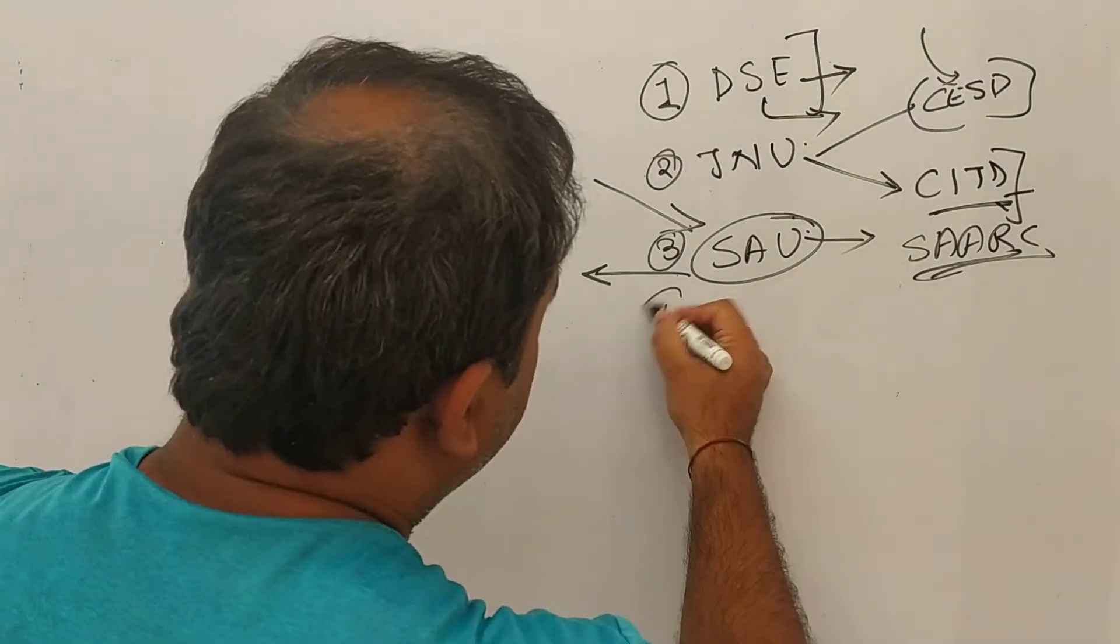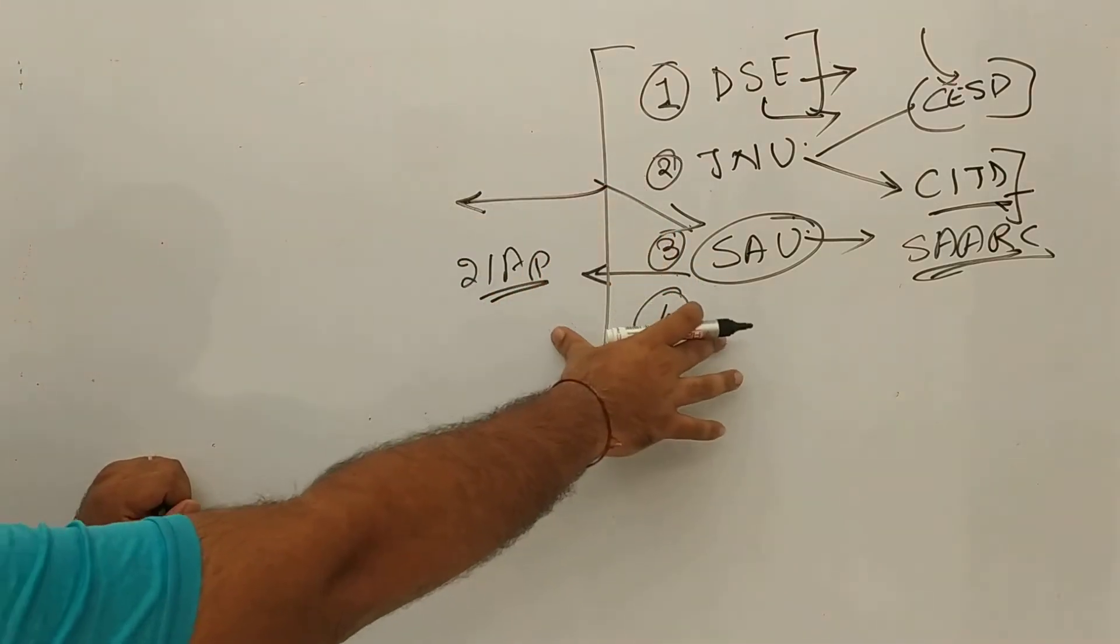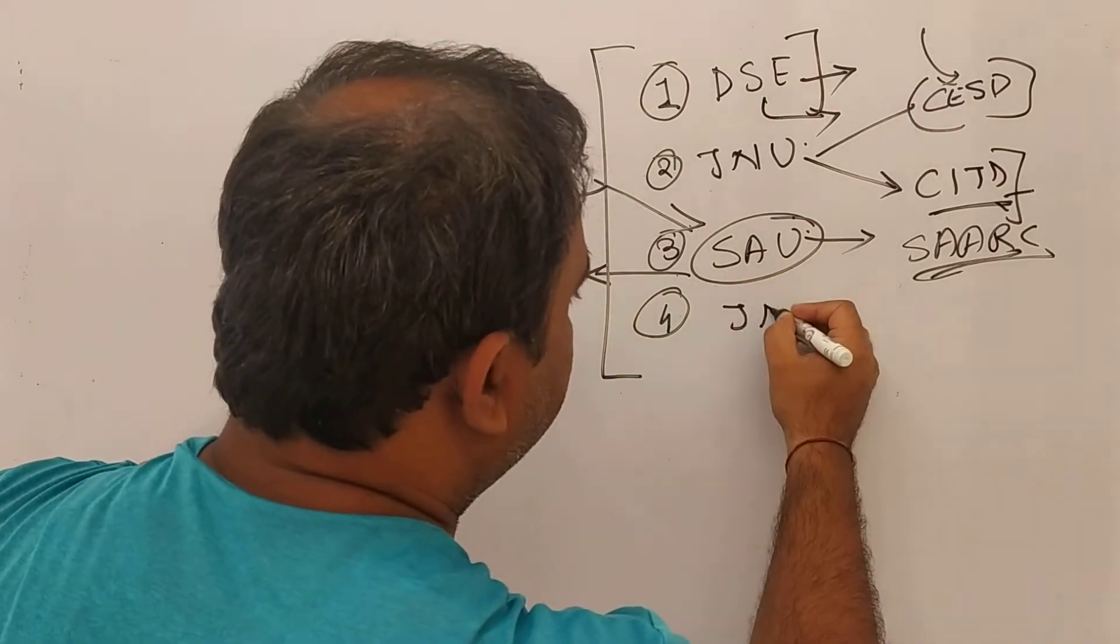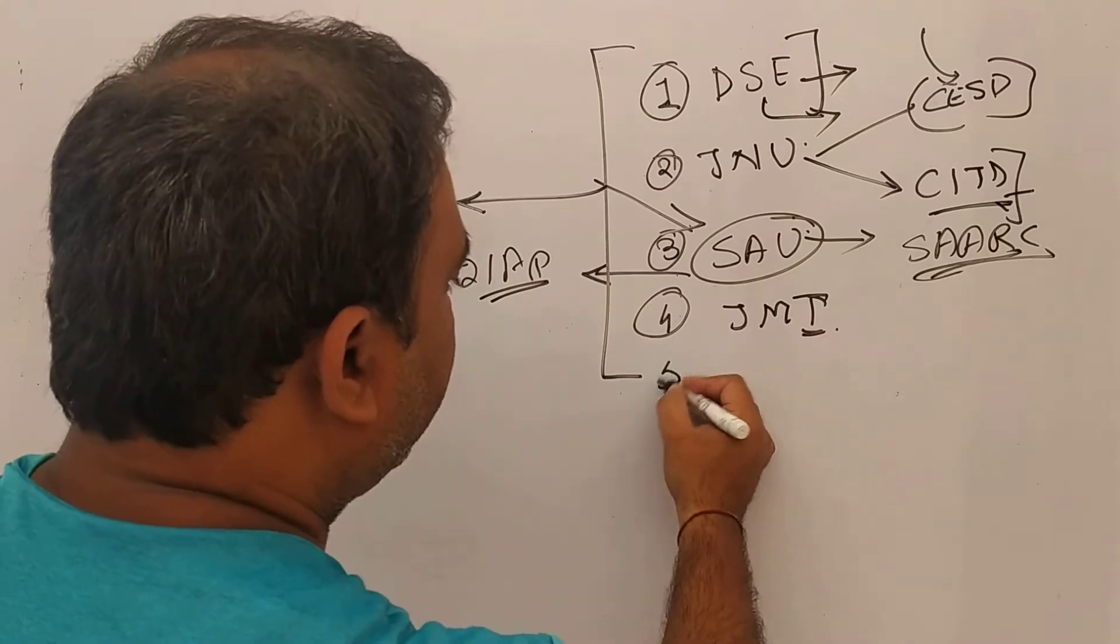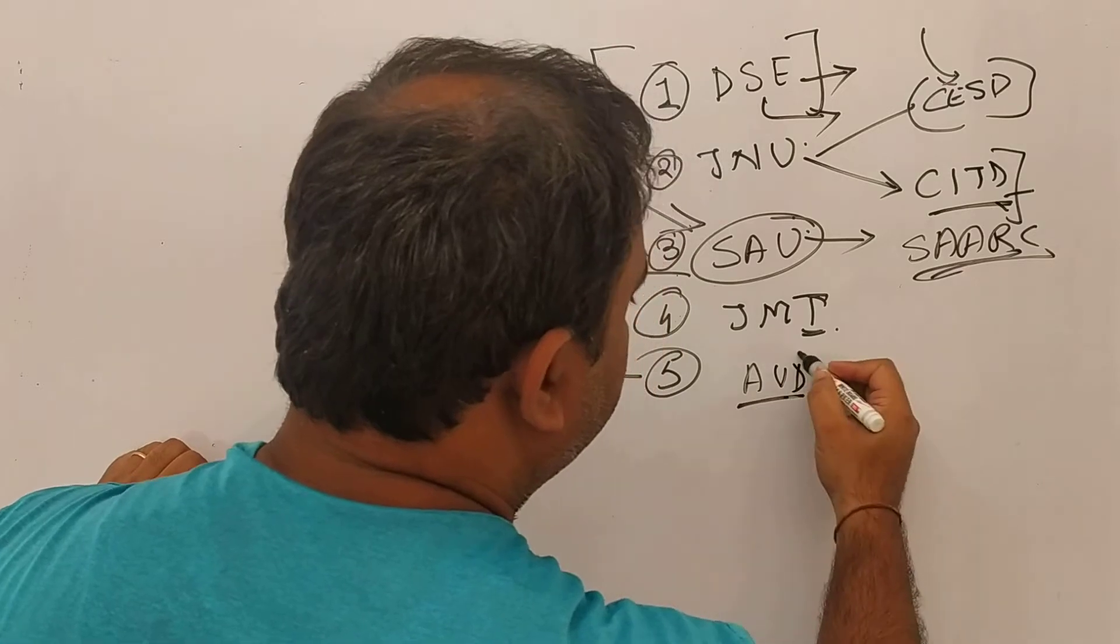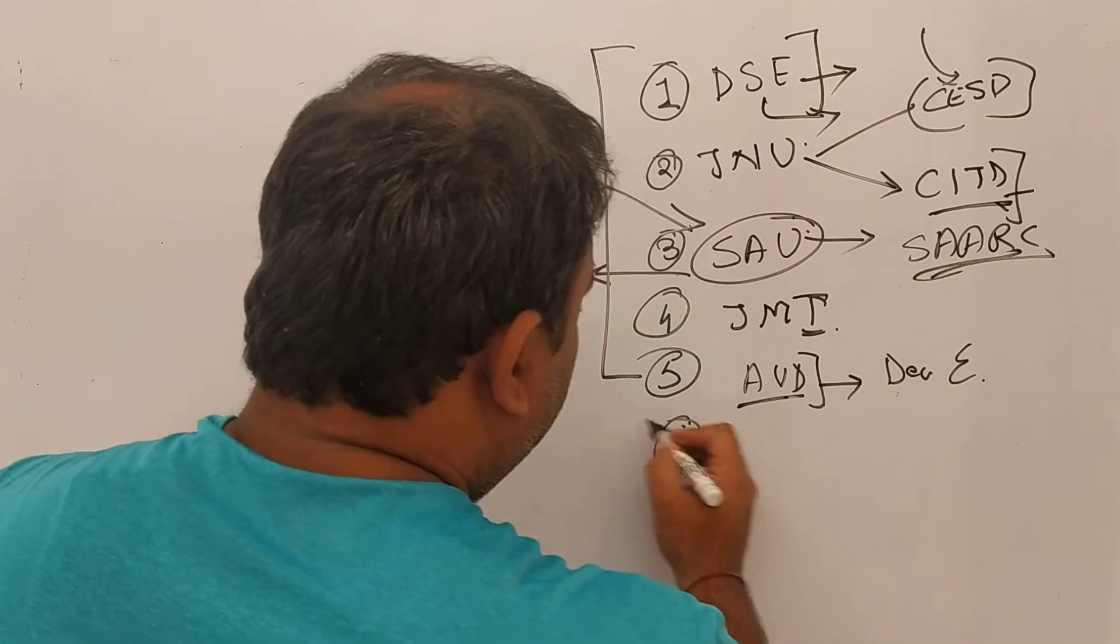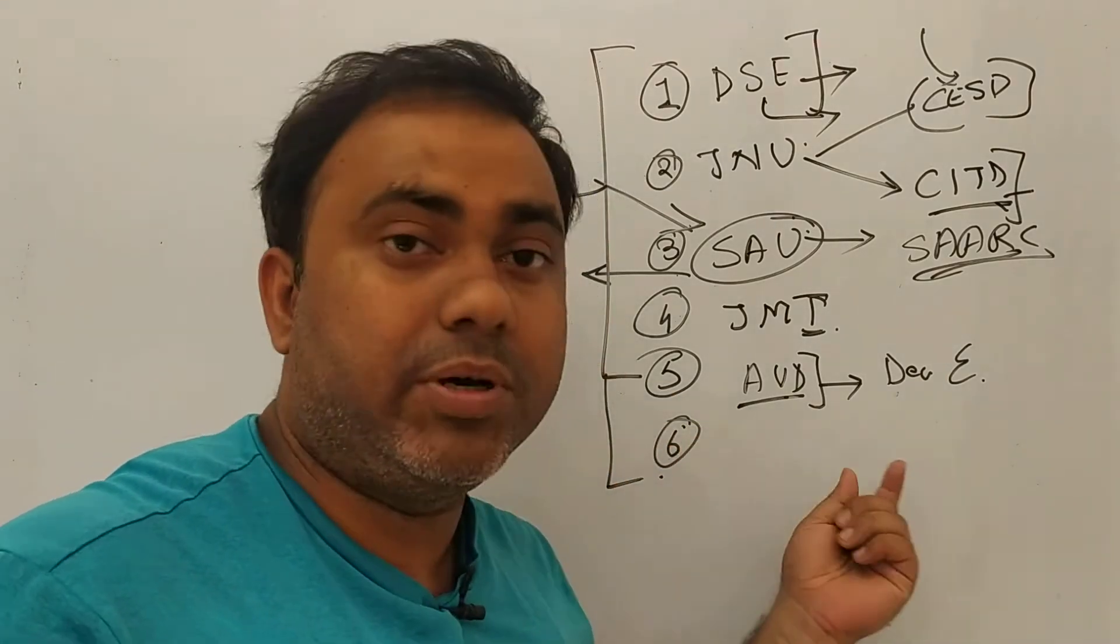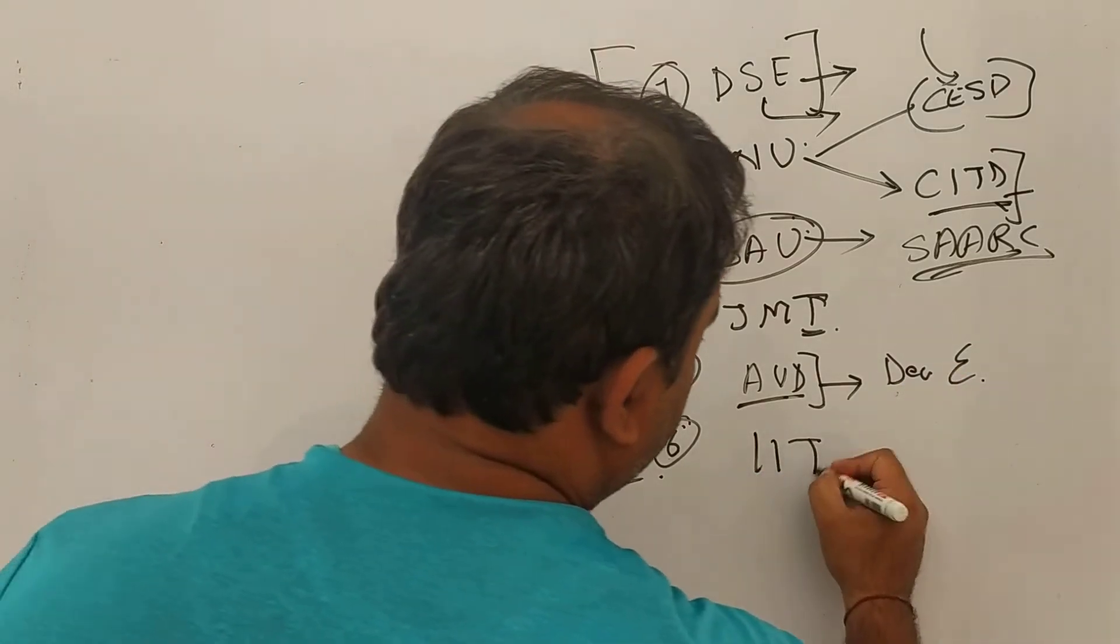Fourth in the list. So in a way, the classification that we are doing, you can say that all those institutions are based in Delhi. So they have their development economics program, apart from all those institutions, the sixth number which we thought of discussing with you is IIT Delhi.